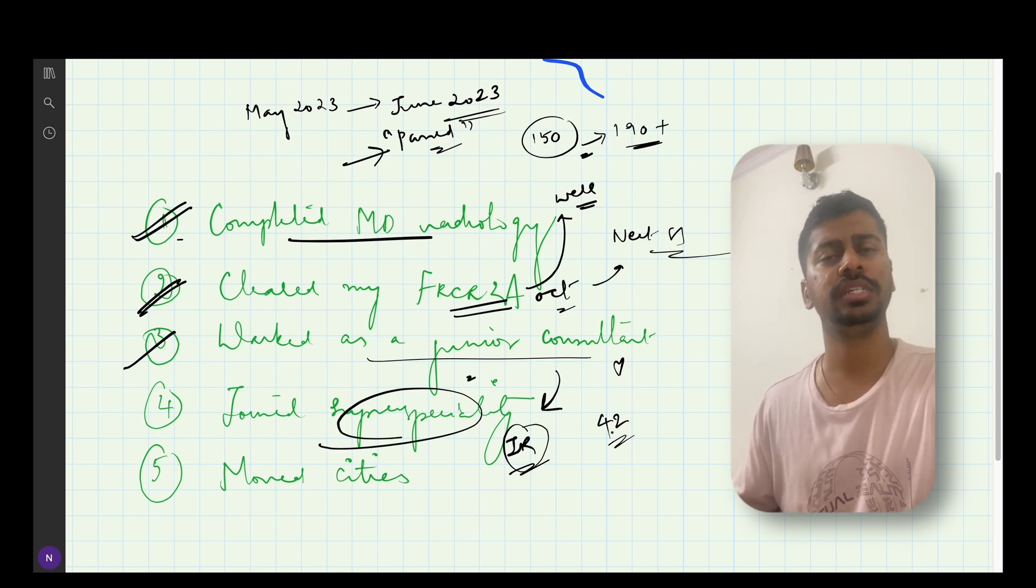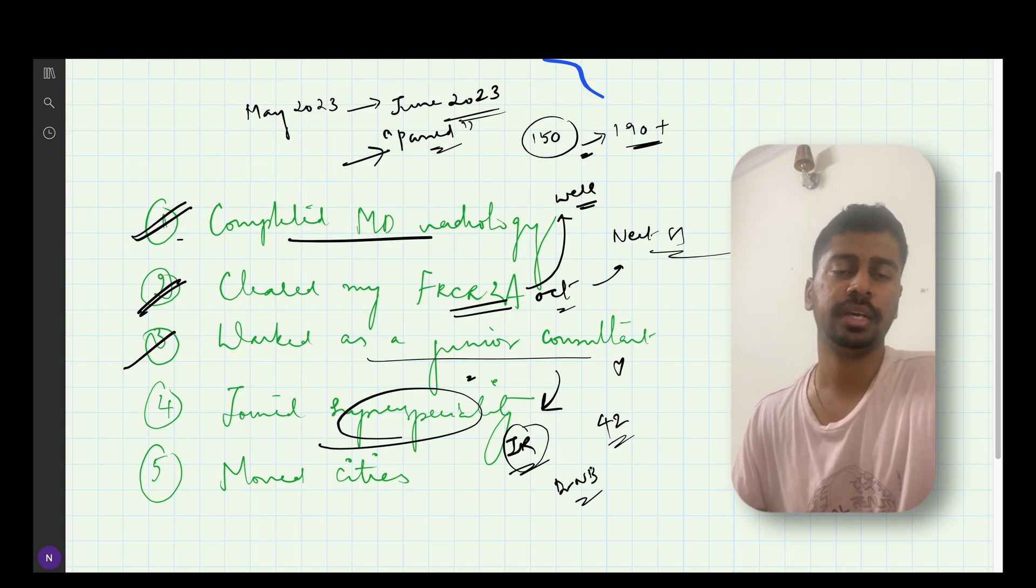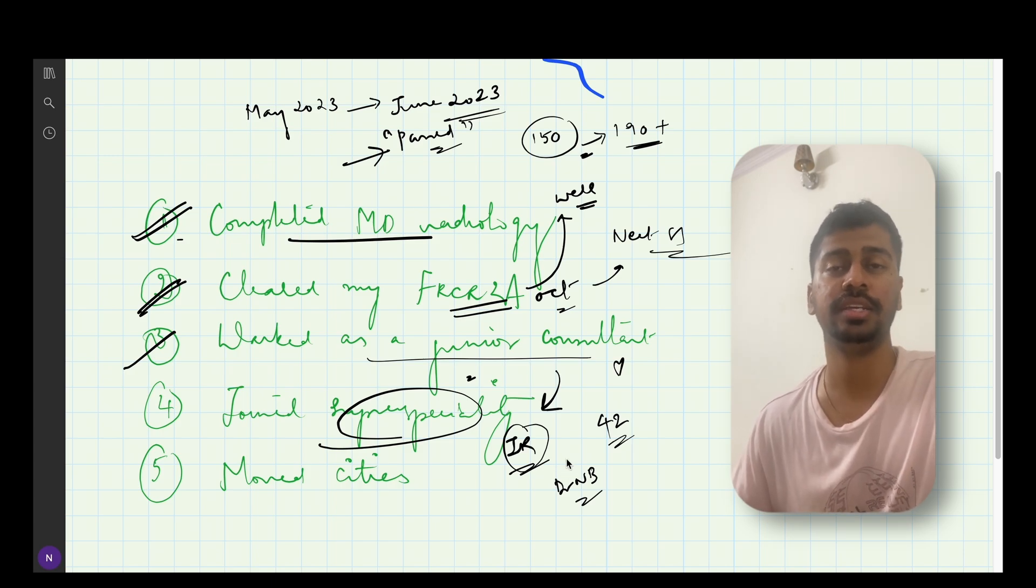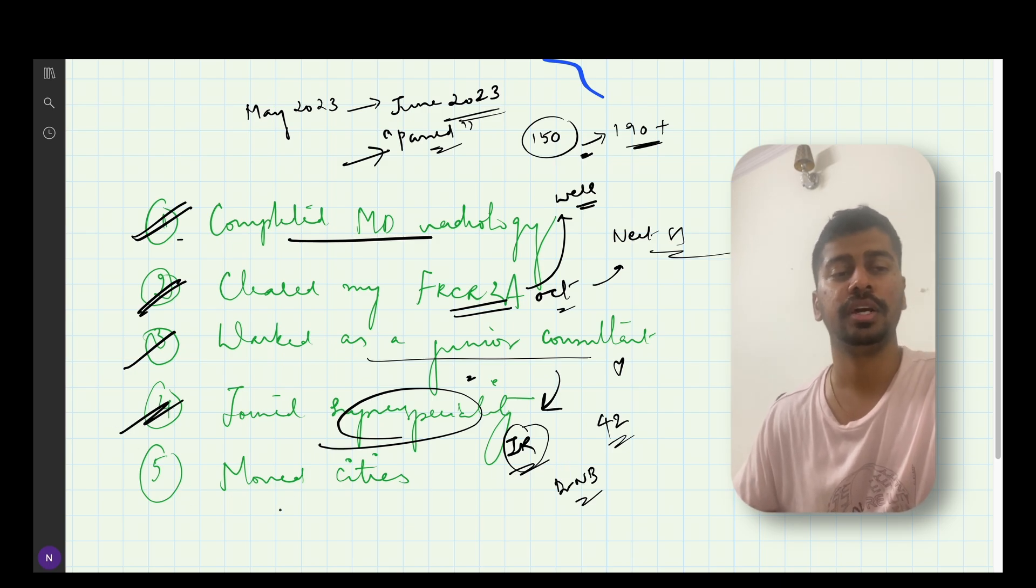There are about 42 intervention radiology seats, super specialty seats in India, and I managed to join Doctorate in National Board, DrNB, in intervention radiology. This is another big update in my life and I will make a video regarding life as an intervention radiologist and why I chose to join intervention radiology after giving the exam, my thoughts about it and all in a future video. Again, if you're a junior resident or if you're a radiology doctor, do watch that video to understand what I went through in making that decision. That was another big life update.